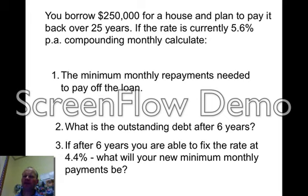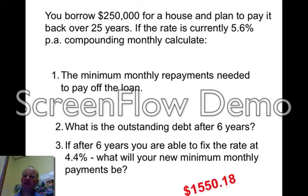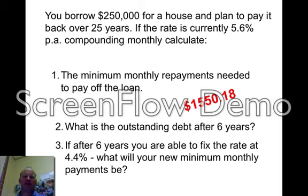After six years you're able to change the loan to a new one at 4.4%. What are your new monthly repayments going to be? So it's a change in interest rates and you want to see what you can save. We have to work out the original payment using a PV payment function, which you've done before. When you do that you'll get an answer of $1,550.18.